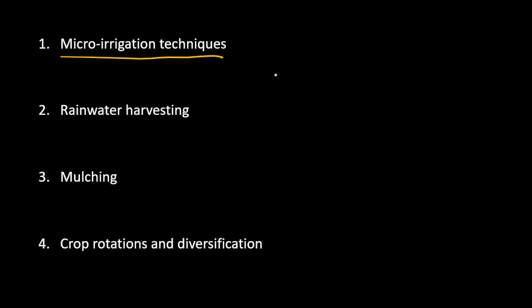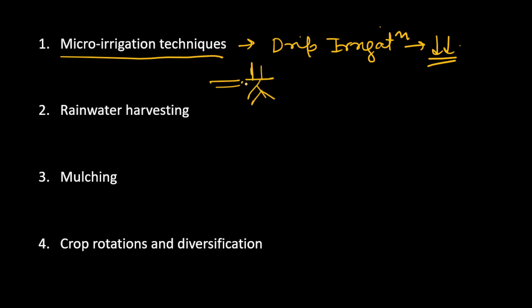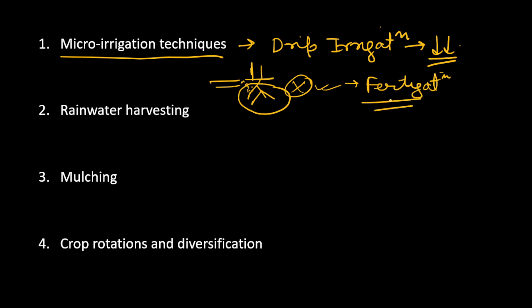First, we can use micro irrigation techniques such as drip irrigation. These techniques reduce the amount of water used — water just falls drop by drop near the roots through pipes, so the high water use of surface flow irrigation is avoided. This also leads to better efficient utilization of fertilizers; we know that fertigation is a related term. Government is also initiating schemes regarding micro irrigation, such as 'More Crop Per Drop', which you can also mention as an example.